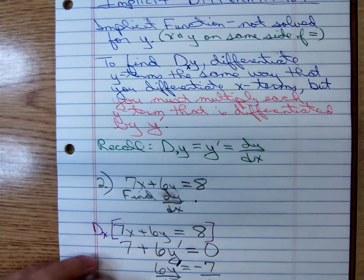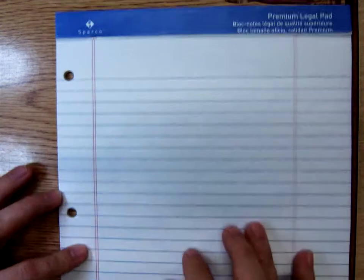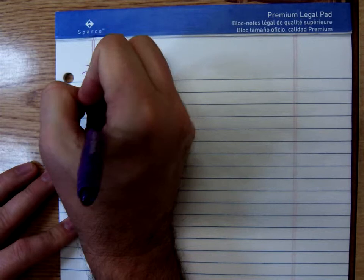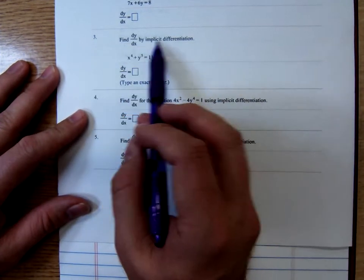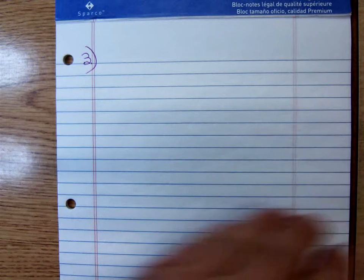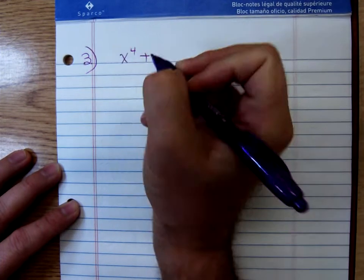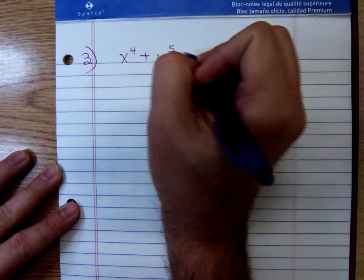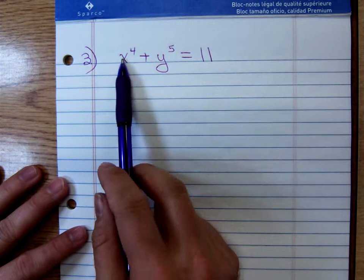Let's do another one — one that's not quite so easy, but it won't be too bad. This is number 3 in the homework. We're told to find dy/dx by implicit differentiation. When I saw that equation — the fact that it wasn't solved for y — I knew I was going to have to use implicit differentiation. I certainly wouldn't want to solve this for y, because I'd have to move the x to the 4th over, and then take the 5th root of both sides.